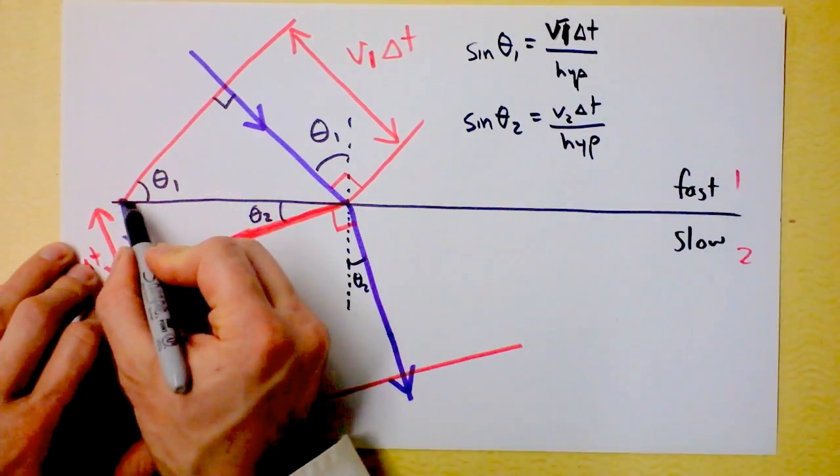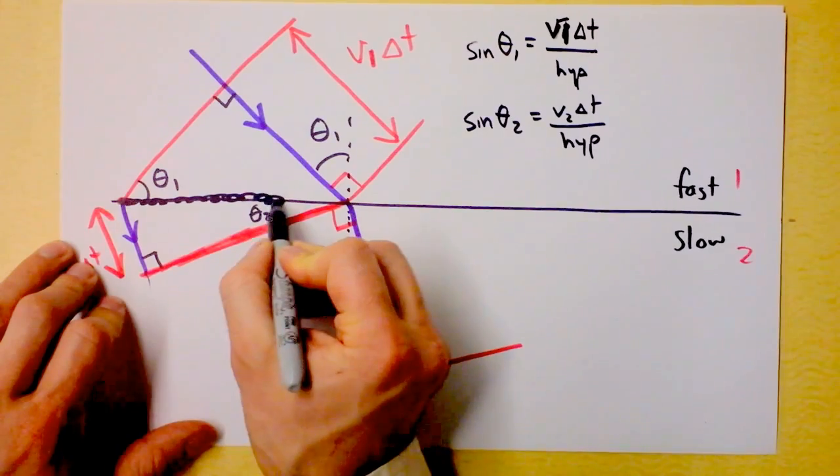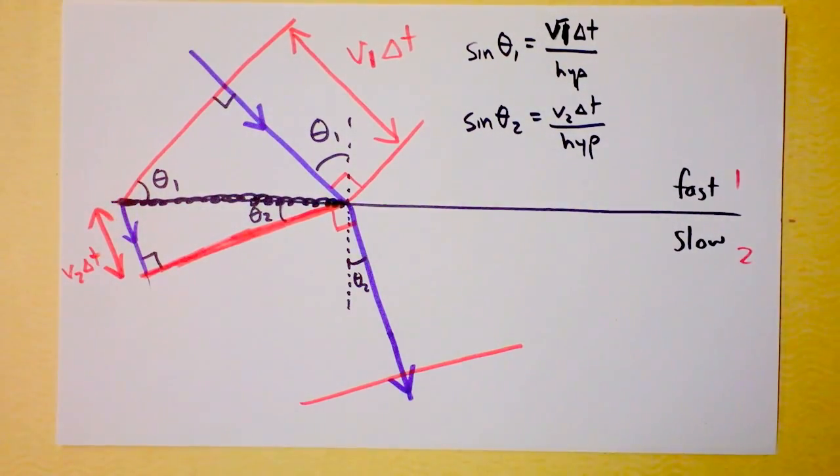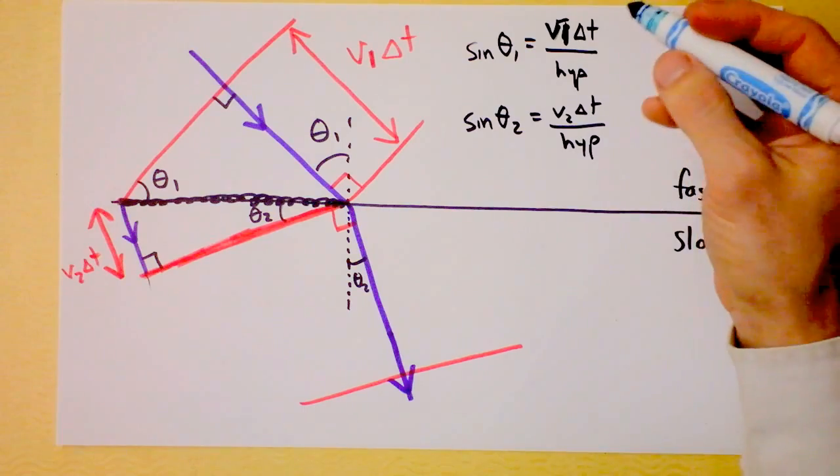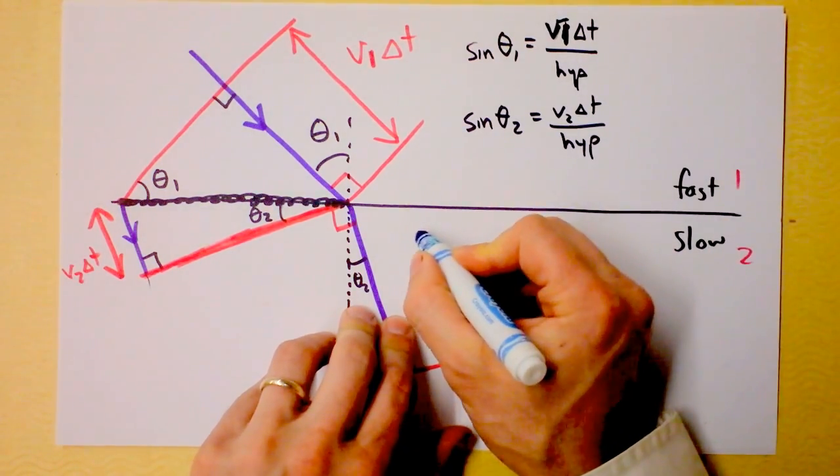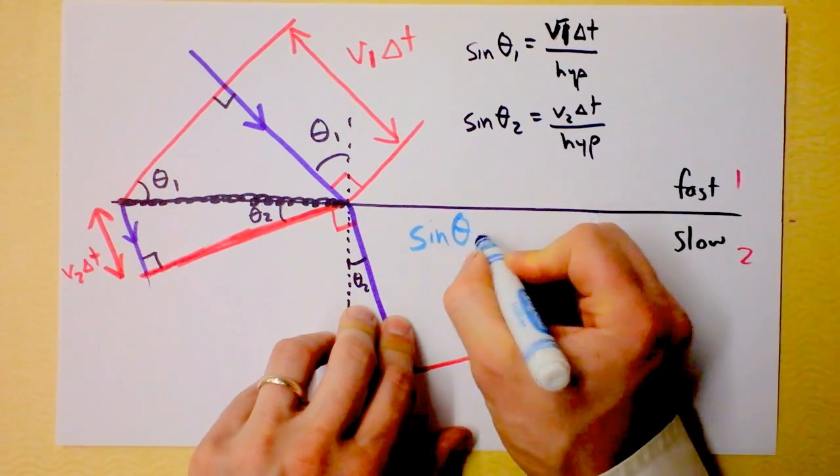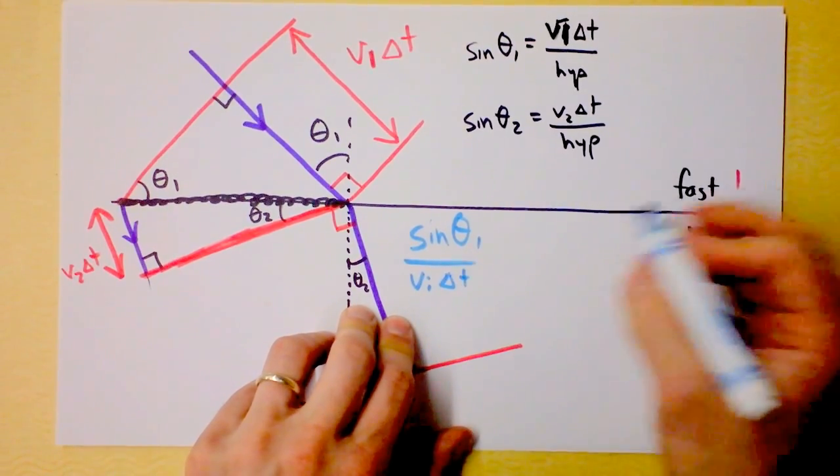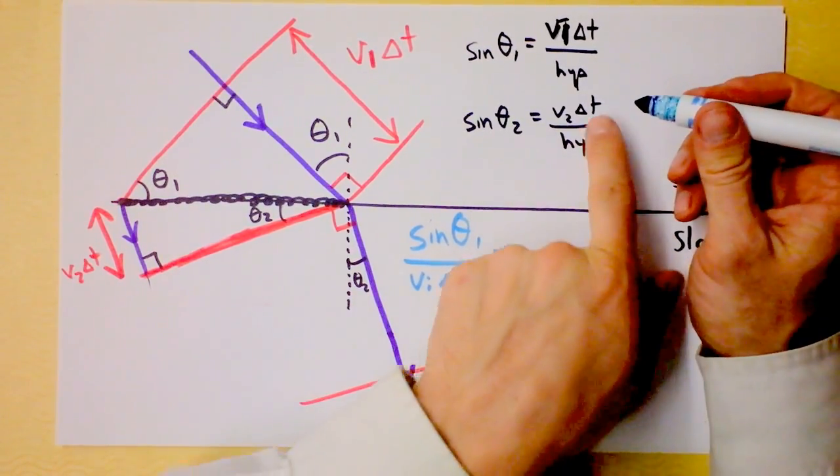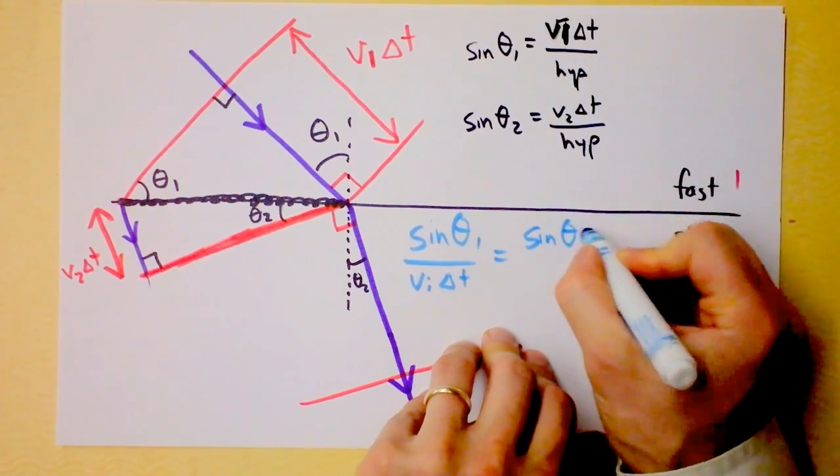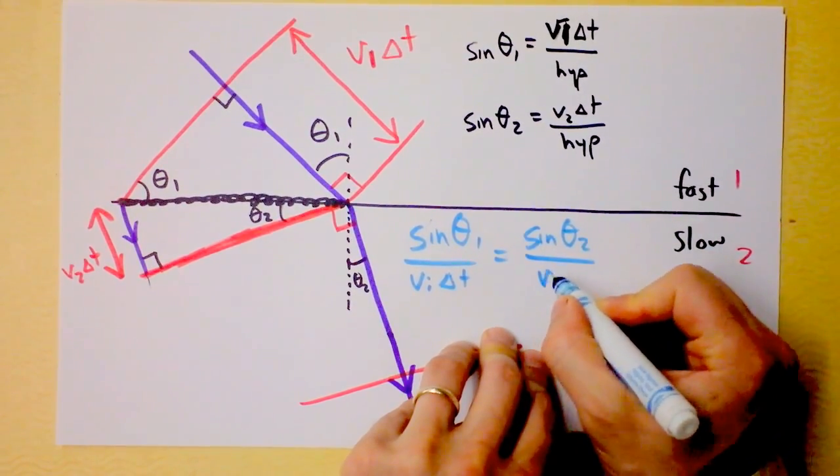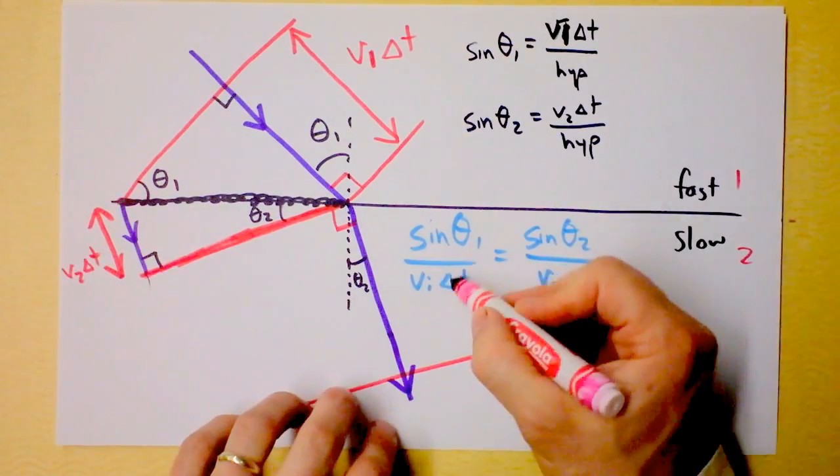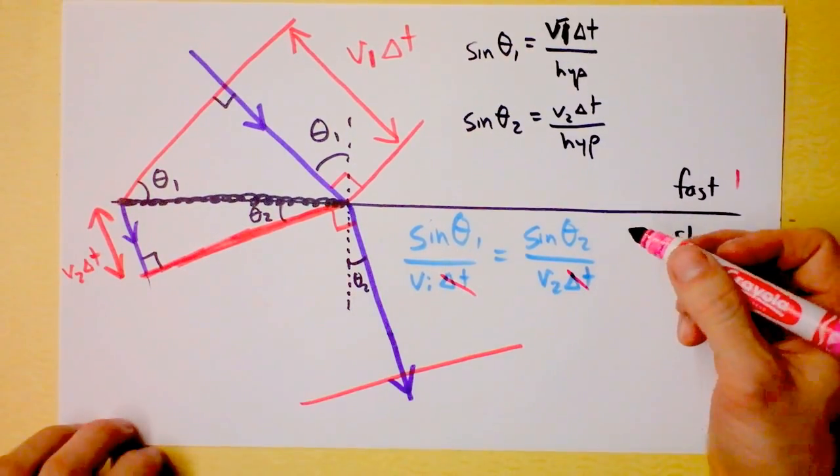You know that 1 over hypotenuse has to be 1 over hypotenuse, because this is the hypotenuse of both of them. It's the same length. So I can make the conclusion, I'm going to say that 1 over hypotenuse on the top equation says sine of theta 1 divided by v1 delta t is equal to the 1 over hypotenuse on the other side, which is sine of theta 2 divided by v2 times delta t, and we can immediately cross out the delta t's, who needed them anyway?